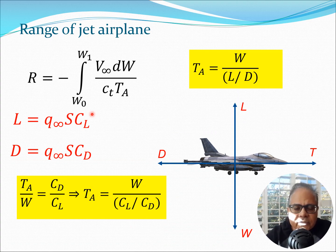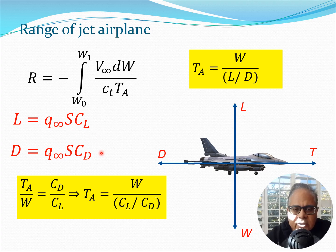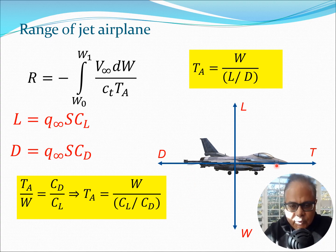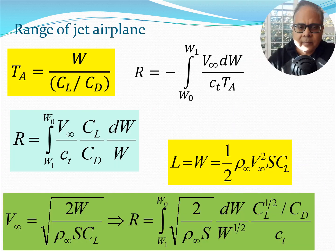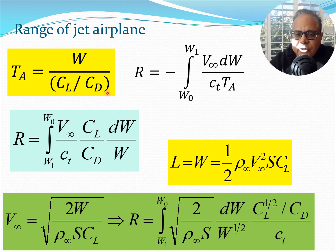We now substitute TA equals W/(L/D) into the range integral. Recall that L and D can be written in terms of lift coefficient CL and drag coefficient CD respectively, where q∞ is dynamic pressure and S is the wing area. Substituting these, L/D equals CL/CD. Therefore TA equals W divided by (CL/CD), with steady level flight always assumed throughout.